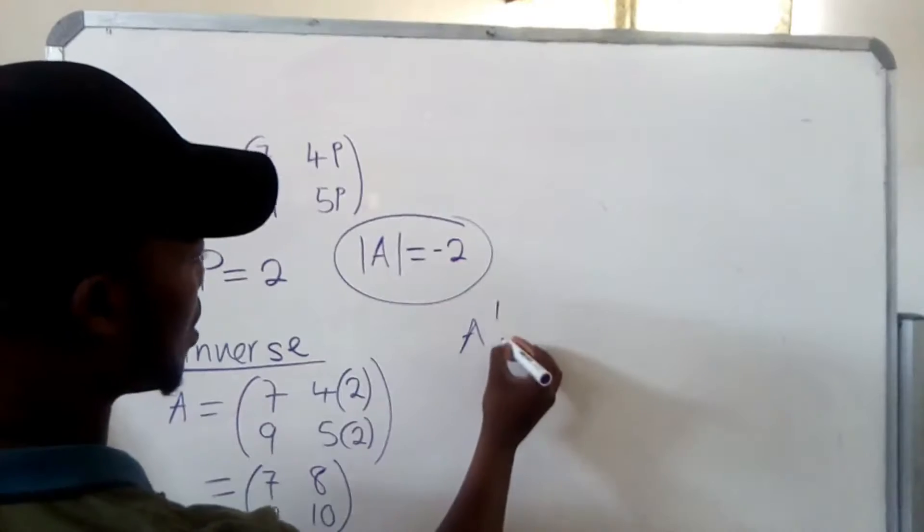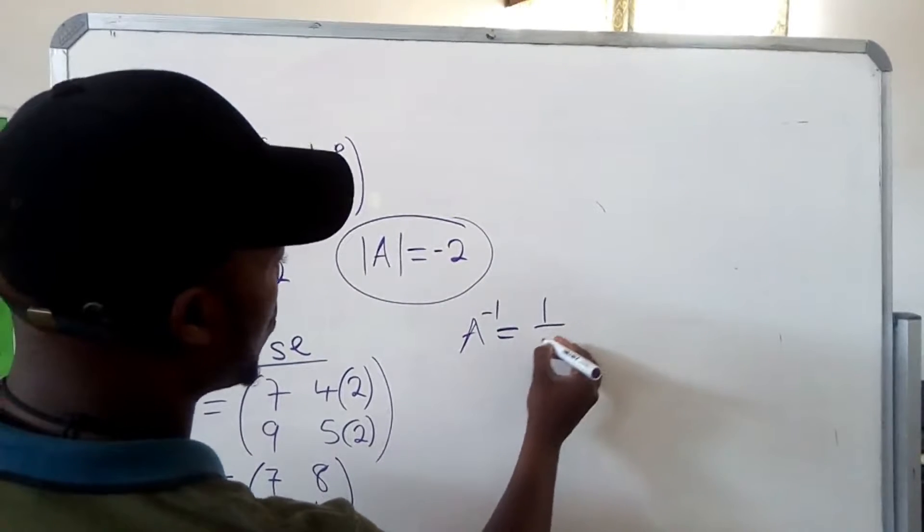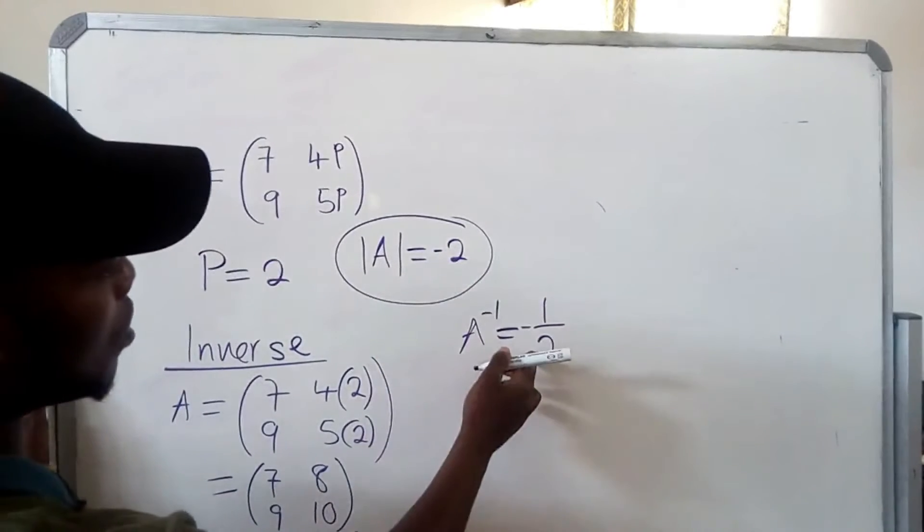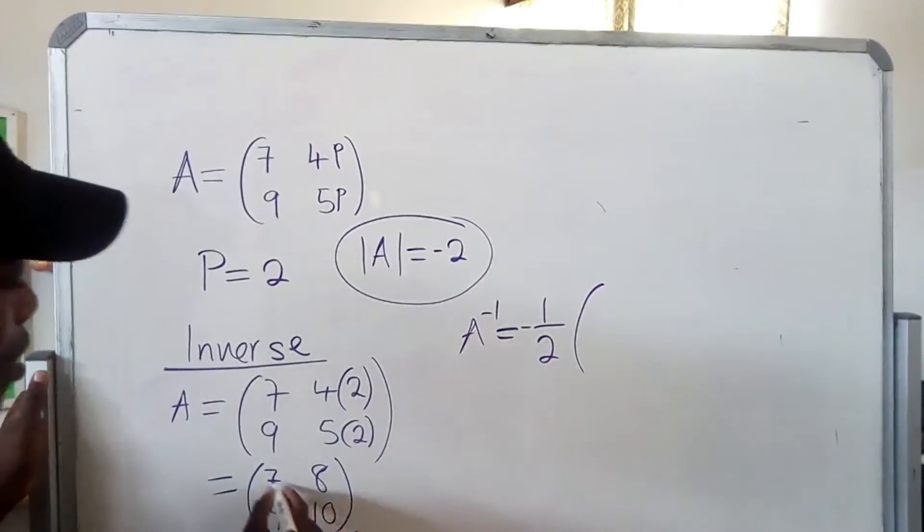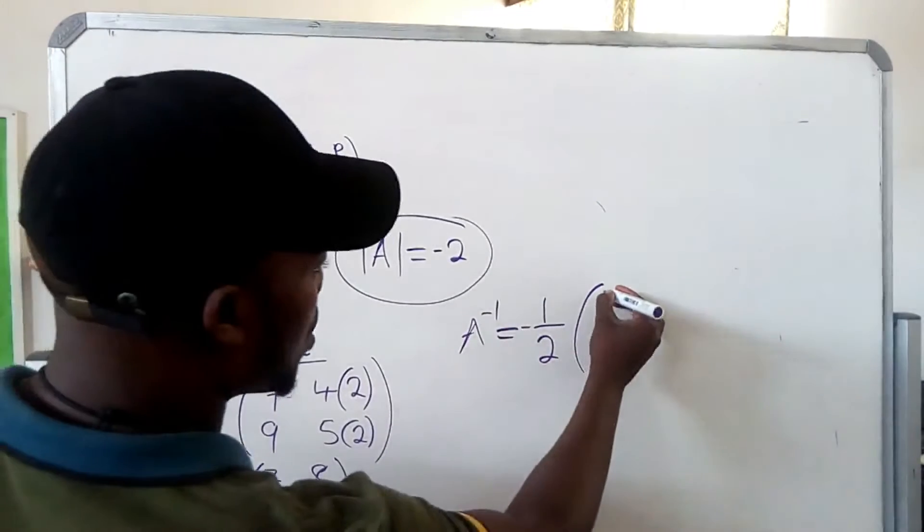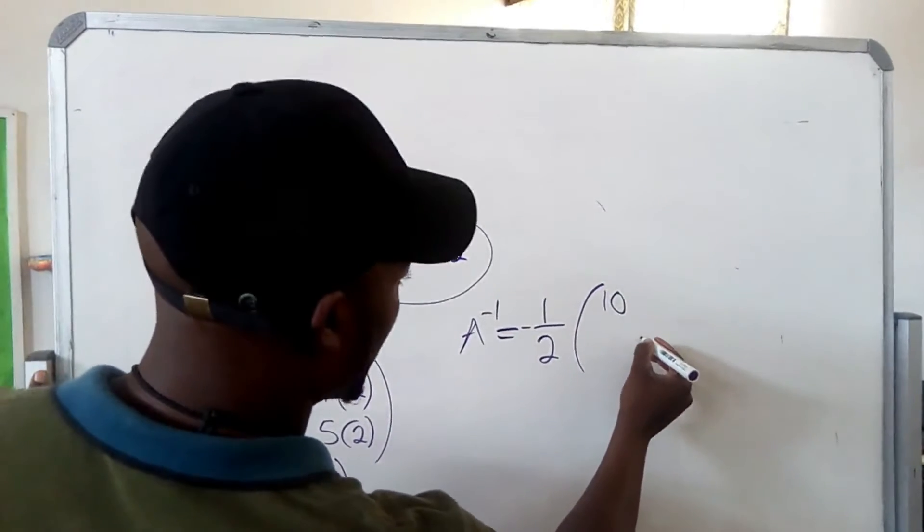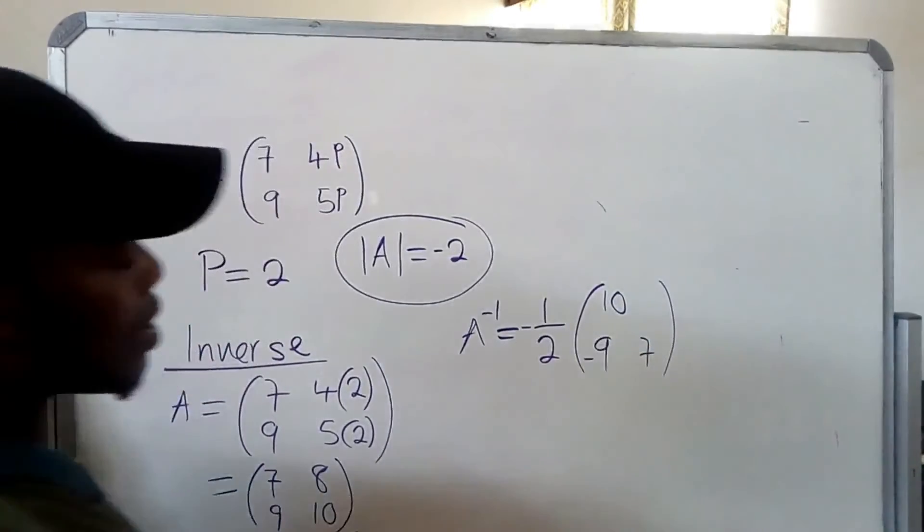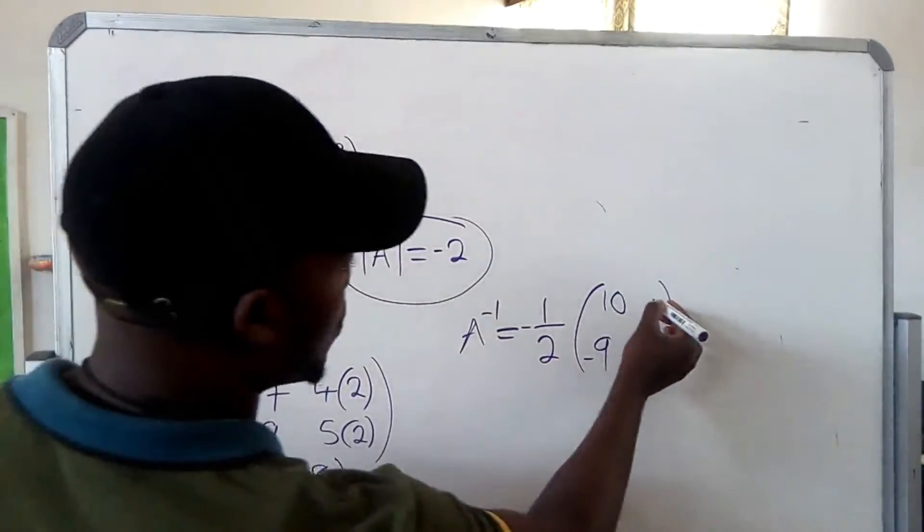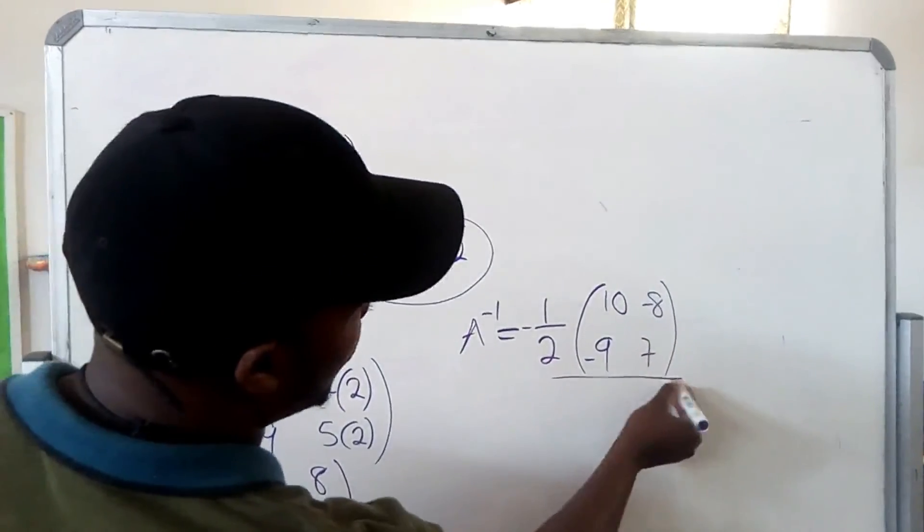So since we have the actual matrix, we need to find inverse, which is A inverse. You need to get 1 over negative 2, multiplied by your matrix. This major diagonal you switch, you make 10 come on top and then 7 where 10 was. So you just switch the positions of this. And then this one, since it's positive 9, you change the sign to negative 9. This one, it's positive 8, you change the sign. So like this, it means you're finished.